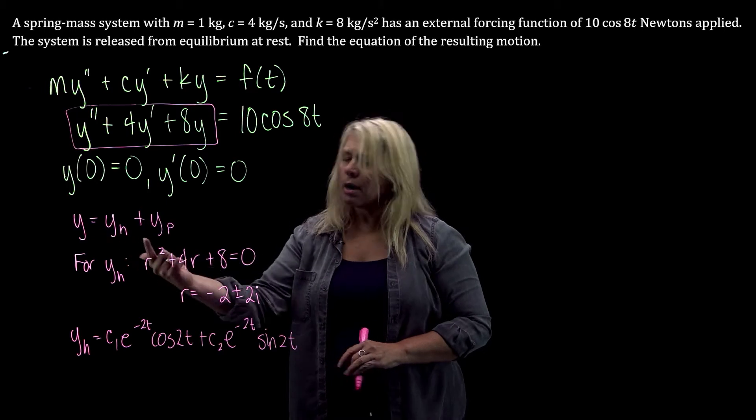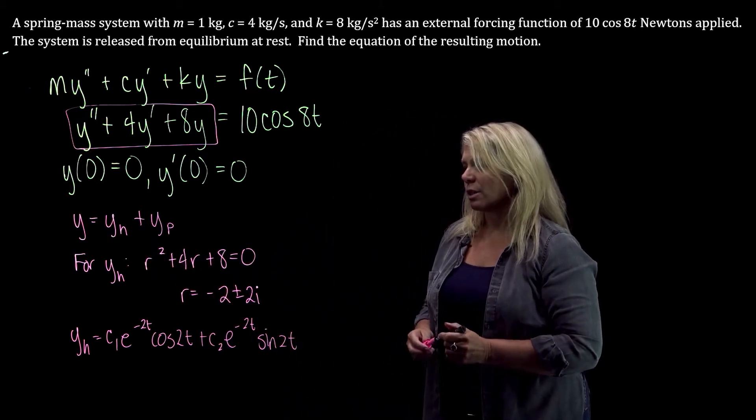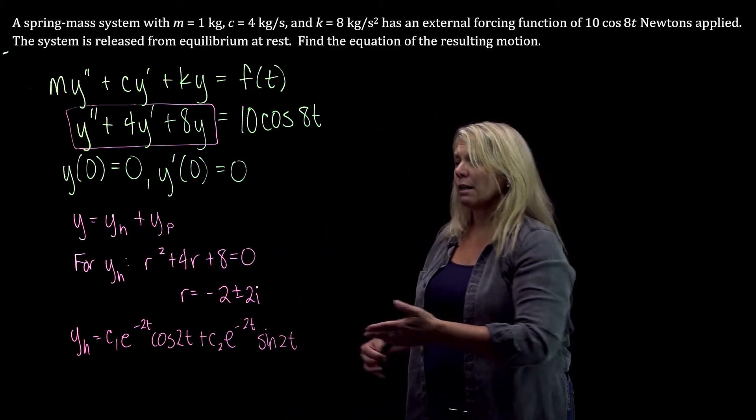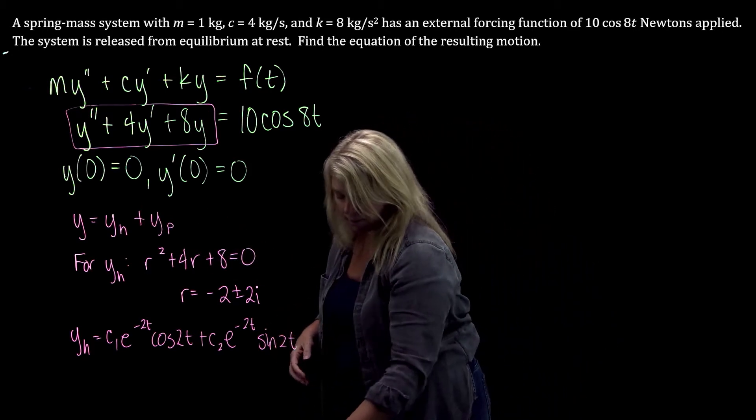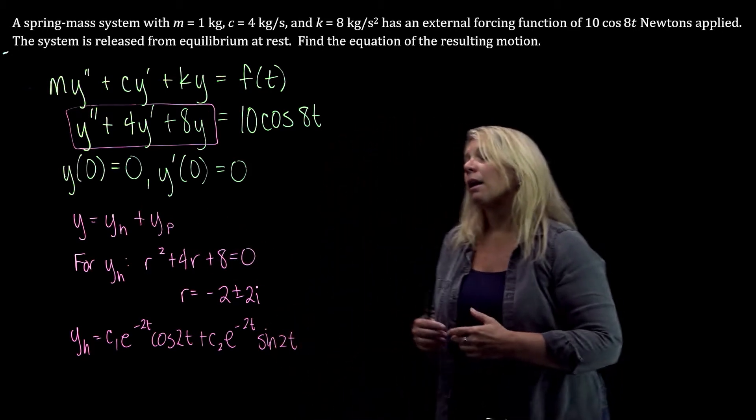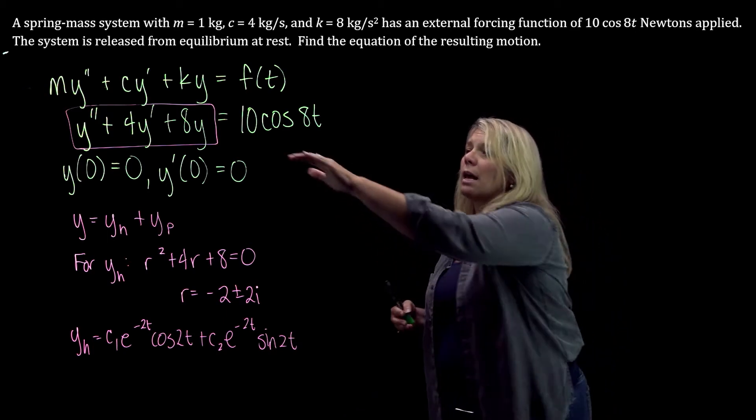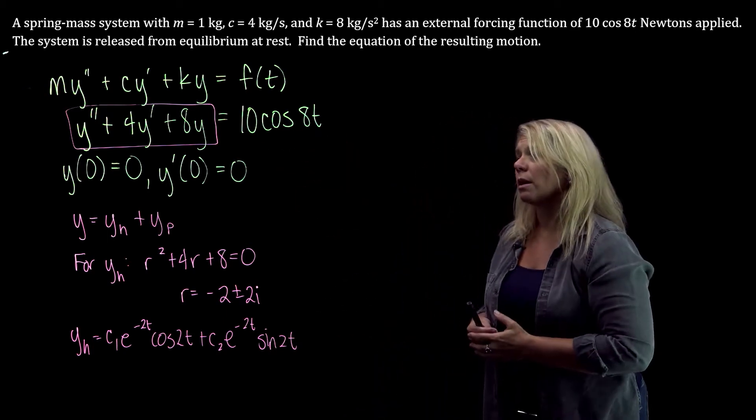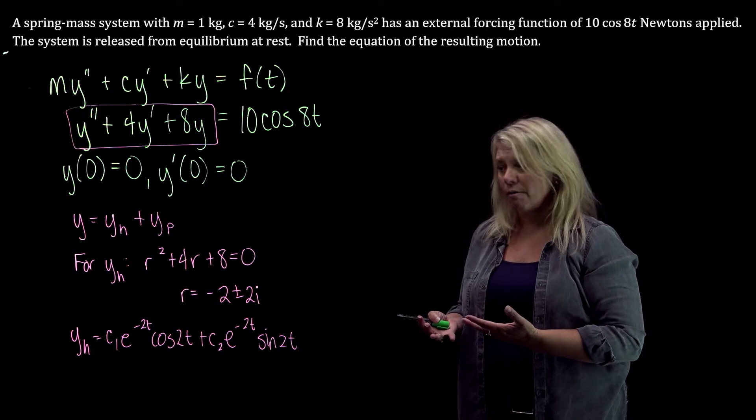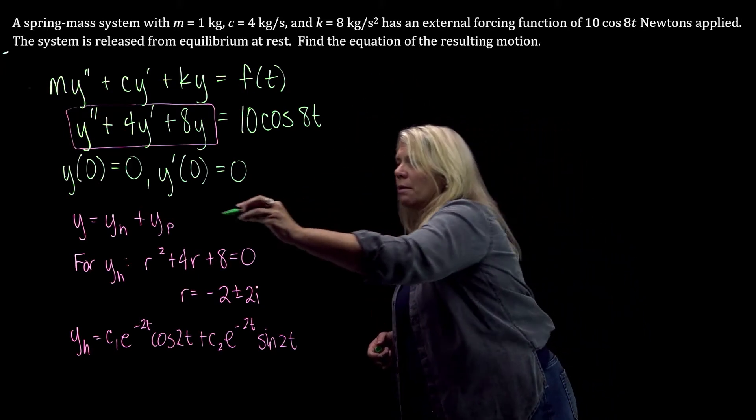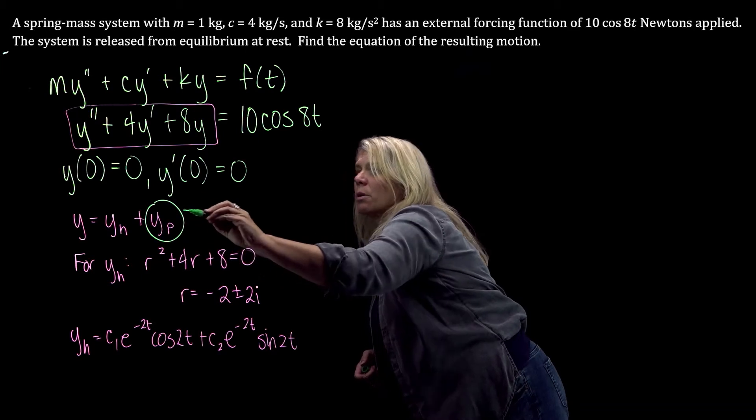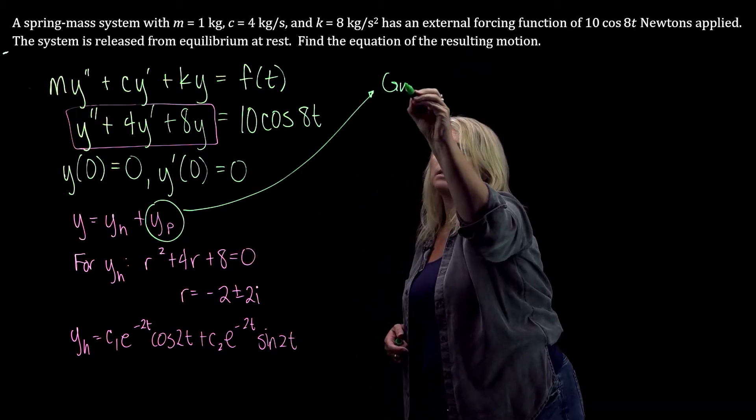Alright, so that gives us part of our solution to the differential equation. I then need to find the particular solution. So I need to use one of the methods that we've talked about for finding that. This is one that is going to work pretty well for using the method of undetermined coefficients. So for finding the yp, I'm going to go ahead and do that part of the work. Up here, we're going to make a guess.